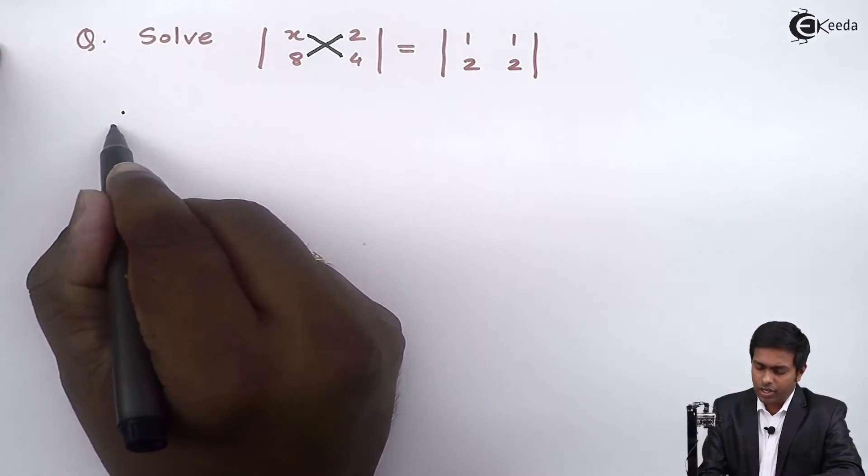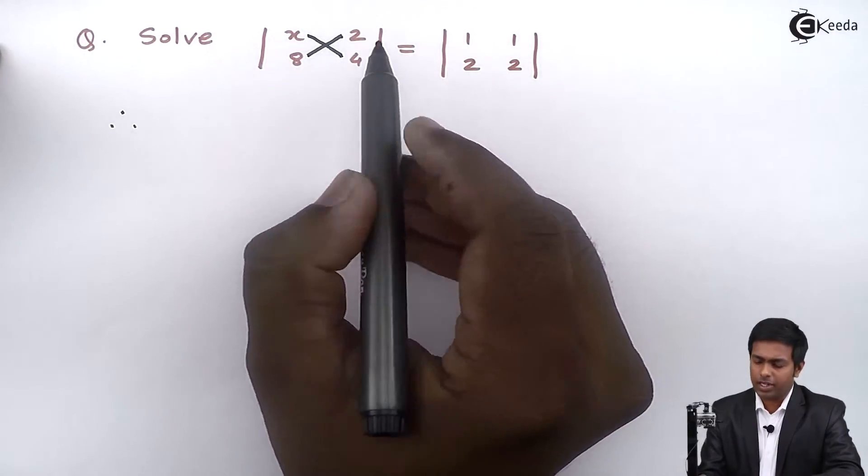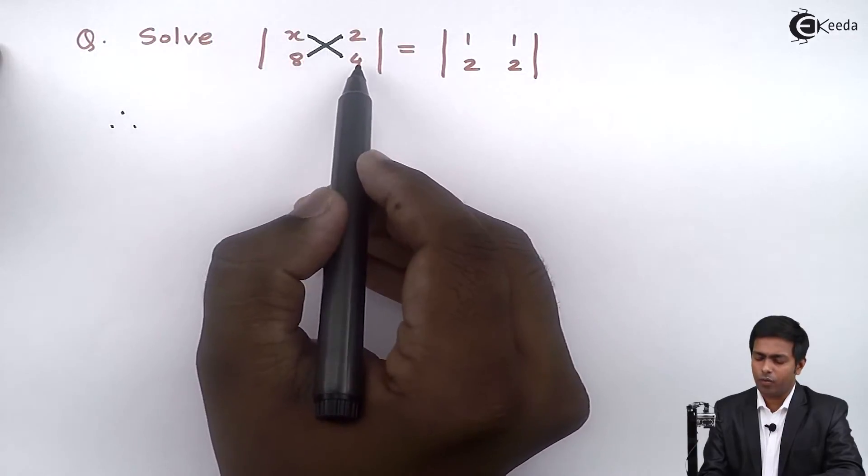So let's start with it. Here on the left-hand side I will multiply the elements on the principal diagonal which are 4 and x.